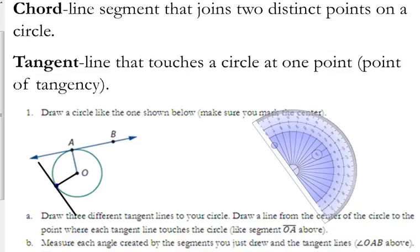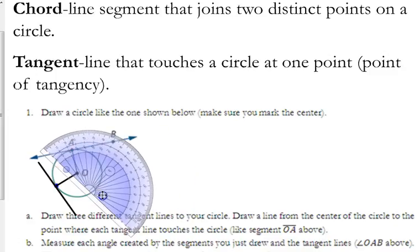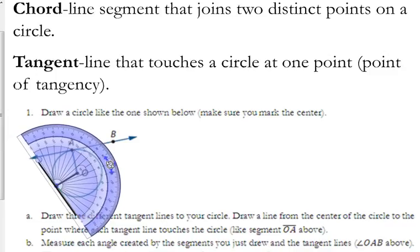Once you have your tangent line and the line from the center to that line, what you need to do is you need to take the protractor and you need to measure the angle. Now, if you're unsure of how to do that, yours has a little circle on the straight side. I'm just going to line up this edge and the middle part of it here. I'm going to line that up with the tangent line.